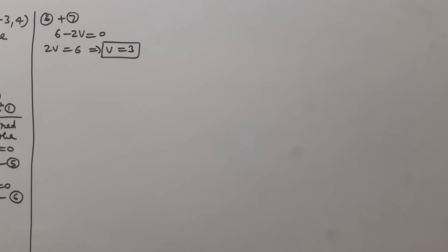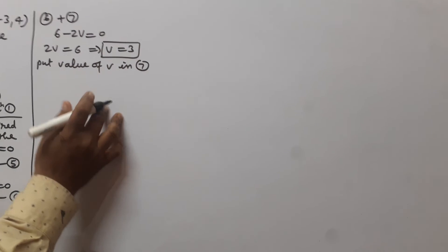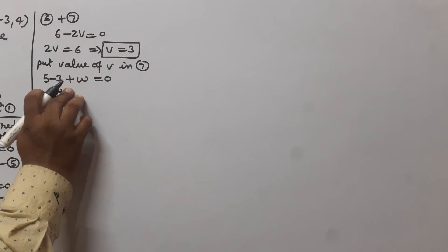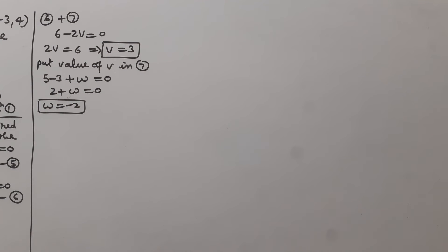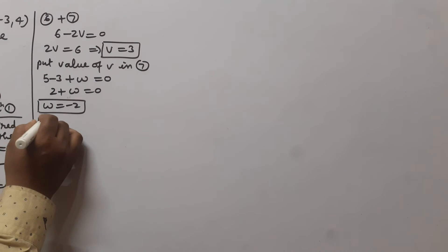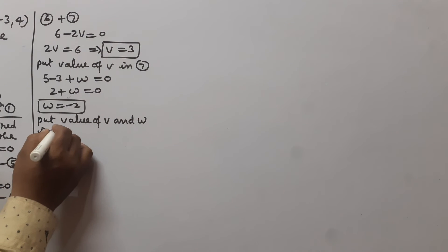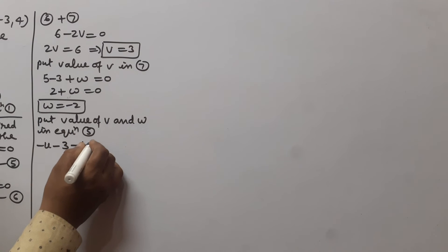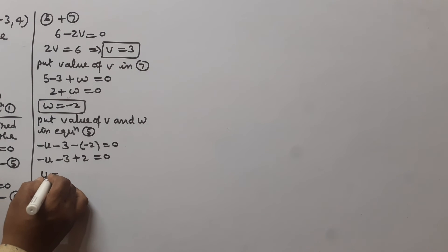Now we put the value of v = 3 in equation 7: 5 - 3 + w = 0, so 2 + w = 0, therefore w = -2. Now we put the values of v and w in equation 5: -u - 3 - (-2) = 0, so -u - 3 + 2 = 0, giving u = -1.